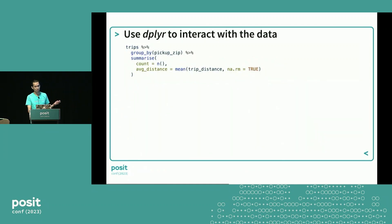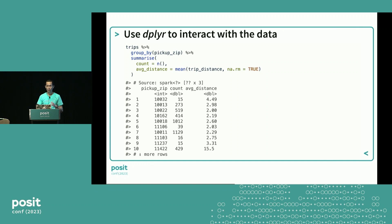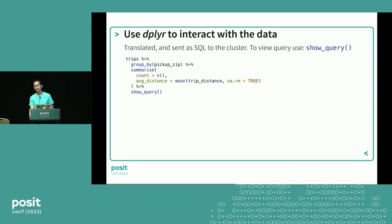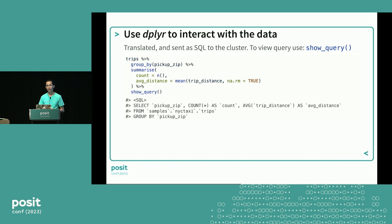Once you have your pointer, you can use DBplyr commands just as you do today. You can push all computation to the cluster — instead of downloading billions of records to summarize locally, you write your DBplyr code treating 'trips' as if it were a local table. In the background, it translates your DBplyr commands into SQL, so all aggregation happens remotely and you just get back the results. If you want to see the generated query, you can use show_query.